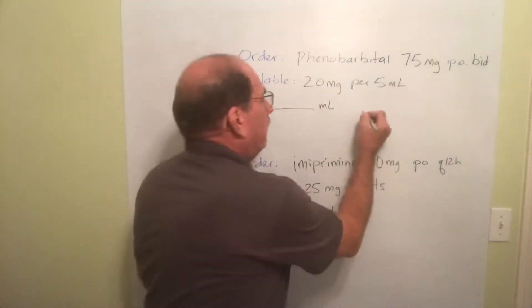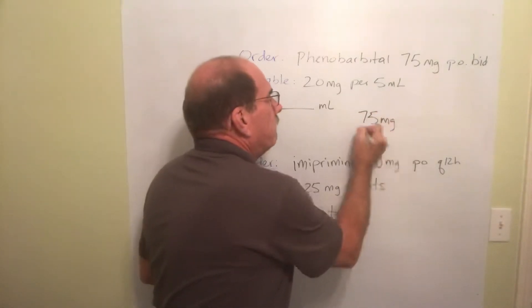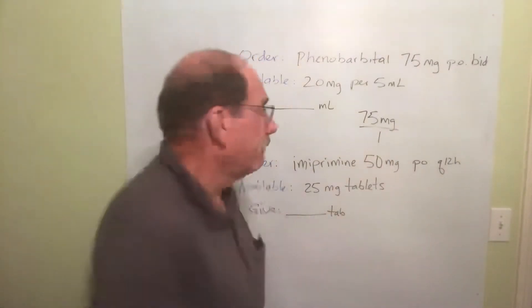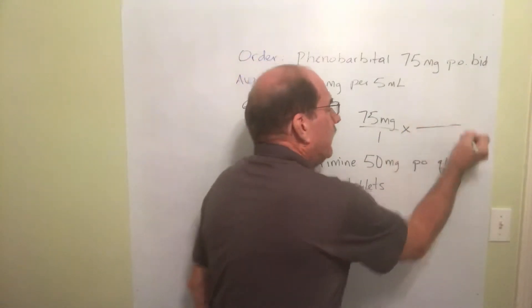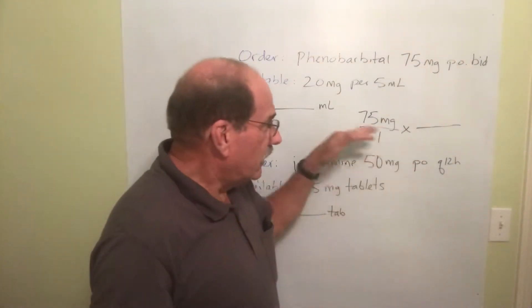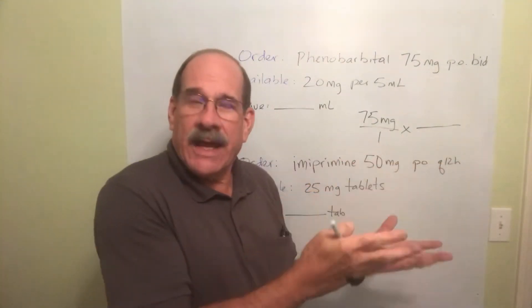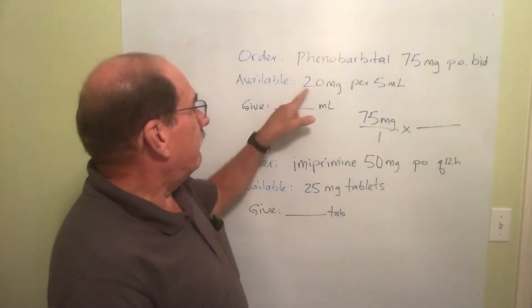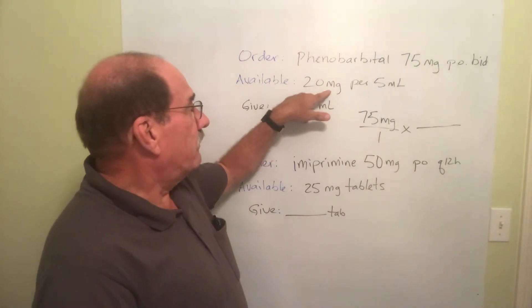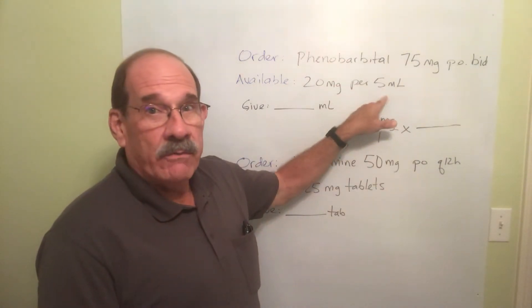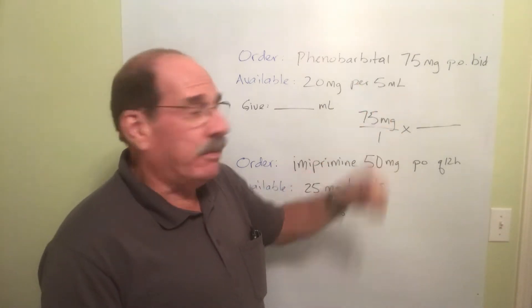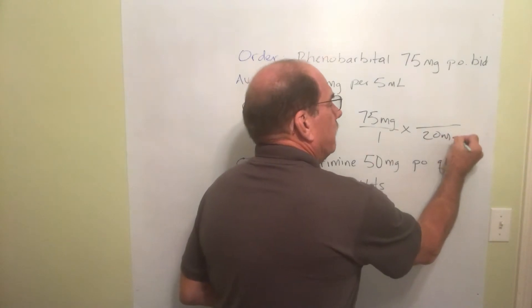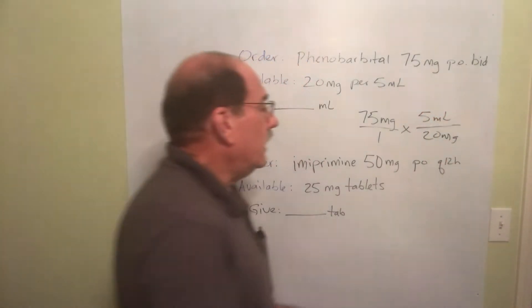Okay, the order is 75 milligrams. I put that over the number 1 to make it into a fraction. I now multiply by my second fraction. Put the x, put the line — once the line is there, now put the numbers in place. The numbers, of course, are how strong is the stuff I've got. I've got 20 milligrams of that stuff in every 5 milliliters. Going from bottom to top, how strong is my stuff? I have 20 milligrams in every 5 milliliters.